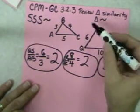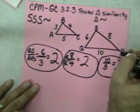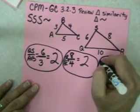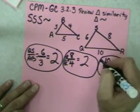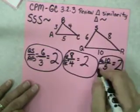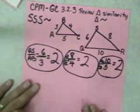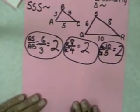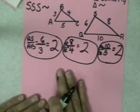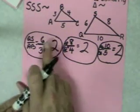And this was RQ over CA. I know you can't read those very well, but basically I need that in there to show that I have identified the corresponding sides.